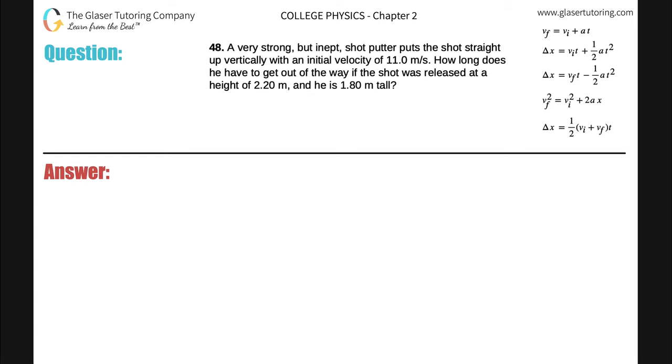Number 48: A very strong but inept shot putter puts the shot straight up vertically with an initial velocity of 11 meters per second. How long does he have to get out of the way if the shot was released at a height of 2.2 meters and he is 1.8 meters tall?